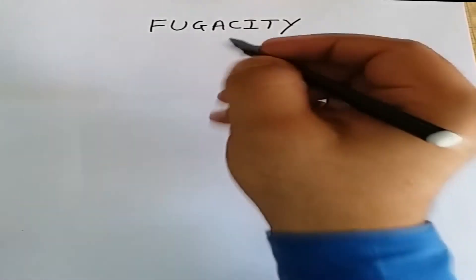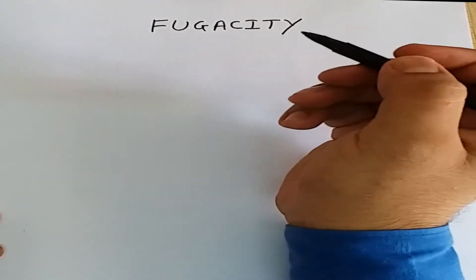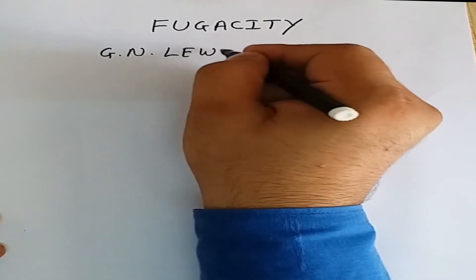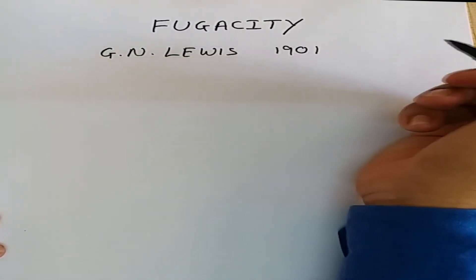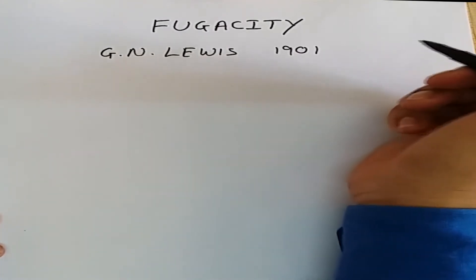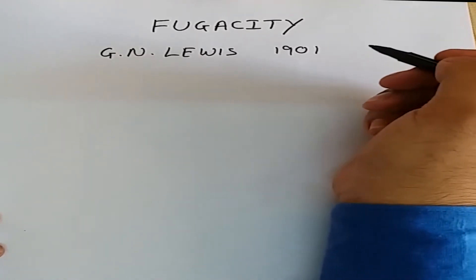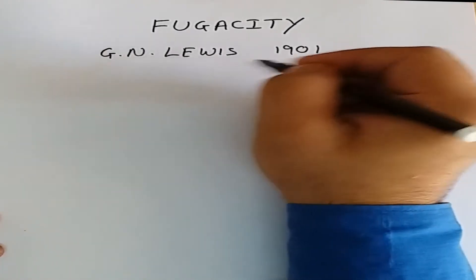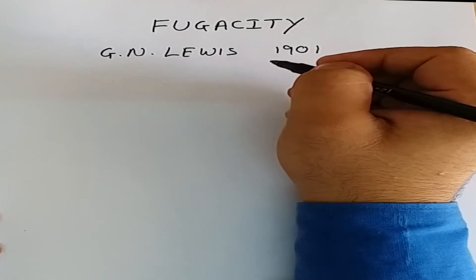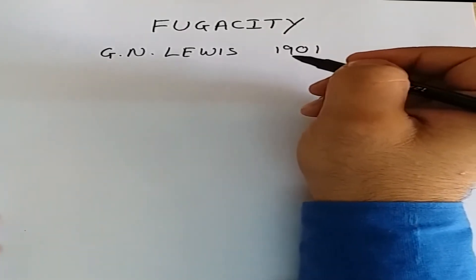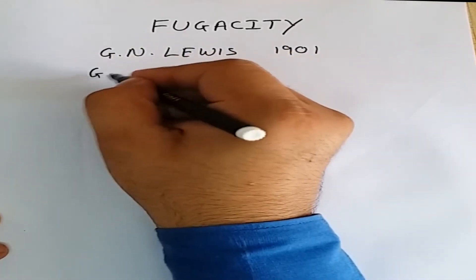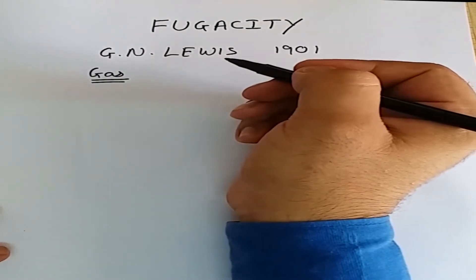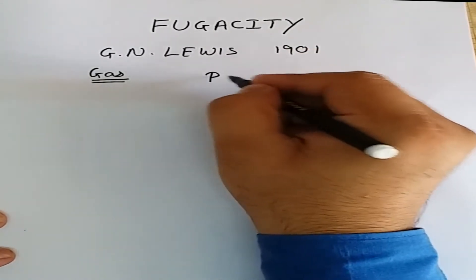Hey guys, welcome back. Today we are going to discuss fugacity. This concept was first given by G.N. Lewis around 1901. He utilized the concept of free energy and derived the concept of fugacity. Fugacity was introduced to represent the actual behavior of gases which are not ideal.